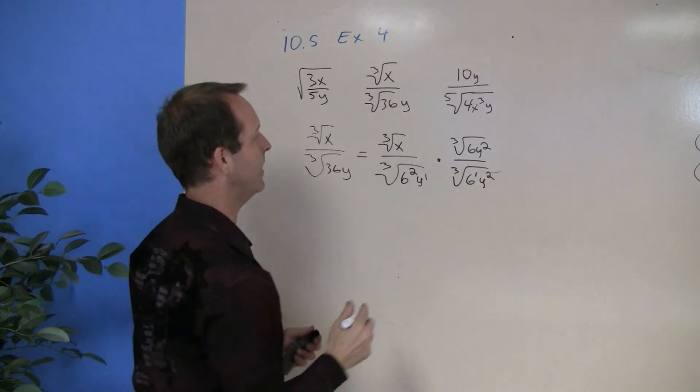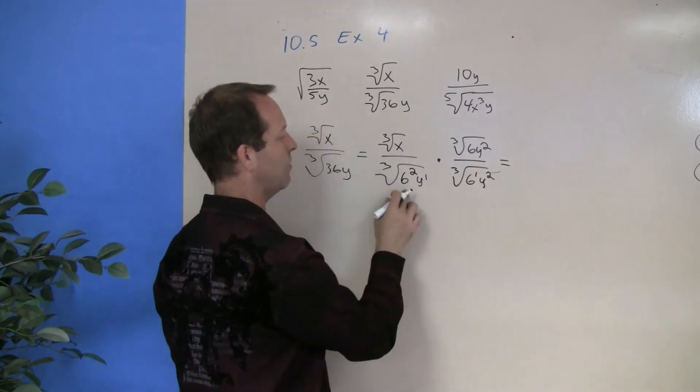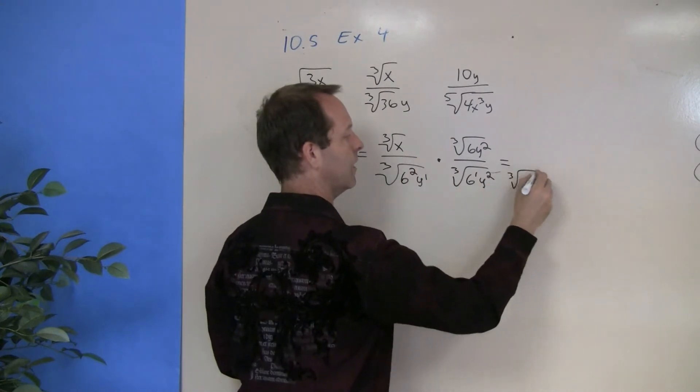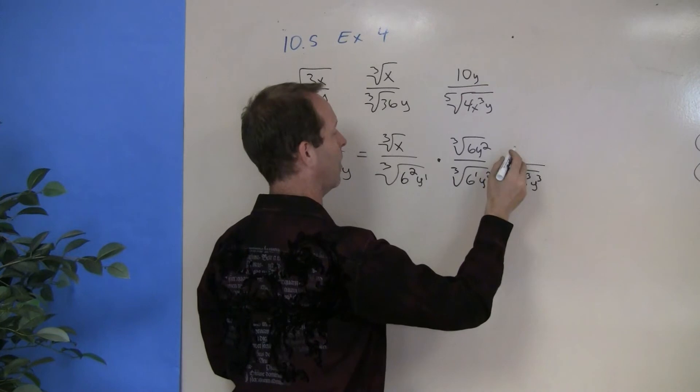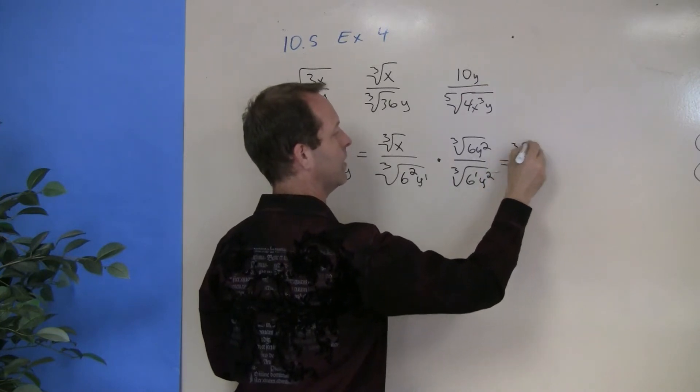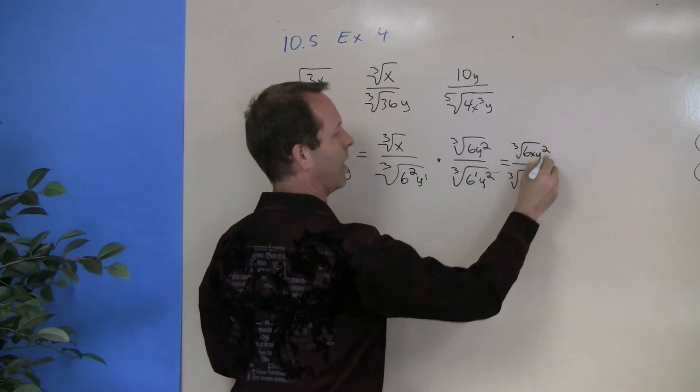So let's multiply that to the cube root. So I'm left with the cube root of 6 cubed, y cubed, all over or underneath the cube root of 6xy squared.